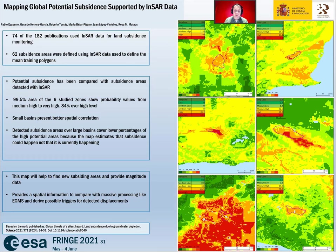Over the large basins, high potential areas are usually larger than detected subsidence. This behavior is related to the fact that the map estimates that subsidence could happen, not that it is currently happening. In short, those areas have a high probability to subside, but there should be a trigger to develop it.